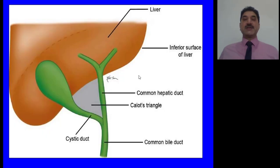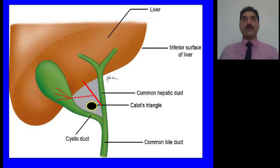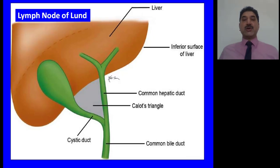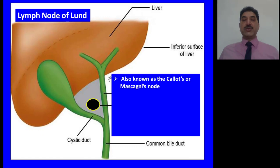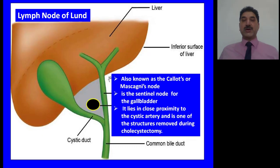In this diagram, we can see the contents of Calot's triangle: the right hepatic artery, from which arises the cystic artery giving small branches to supply the gallbladder. The lymph node of Lund lies in the lower part of Calot's triangle, and there are small lymphatic vessels not visible to the naked eye. The lymph node of Lund is also known as the Calot's or Mascagni's node and is the sentinel node for the gallbladder. It lies in close proximity to the cystic artery and is one of the structures removed during cholecystectomy.